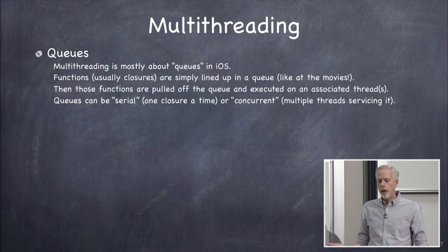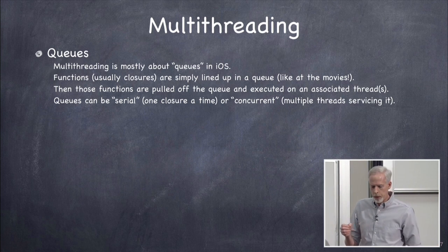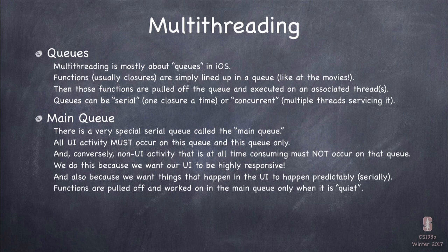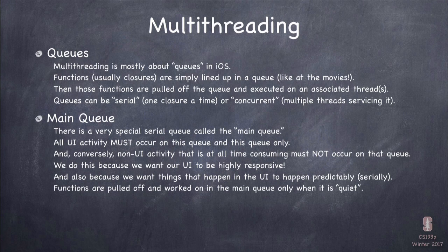A queue is an English word meaning a line. Instead of people waiting for a movie, we're going to put blocks of code - closures - into a queue. The system creates threads as necessary to grab those closures off the front of the queue and execute them on a thread. That's how multi-threading really works in iOS. We don't really care how the system assigns threads to queues - all we care about is the queues. We specify where we want things to run by what queue we put code on.